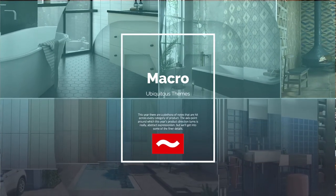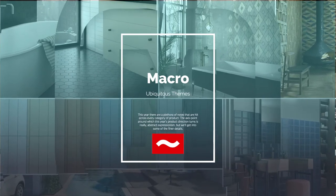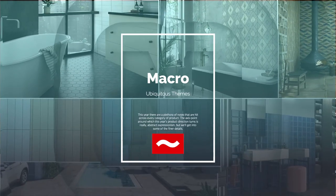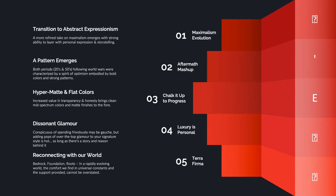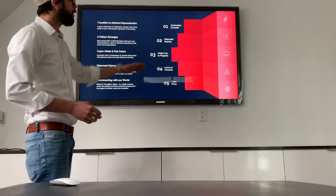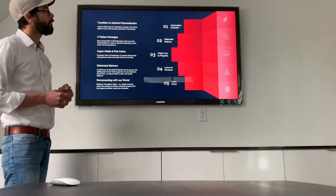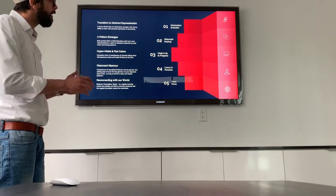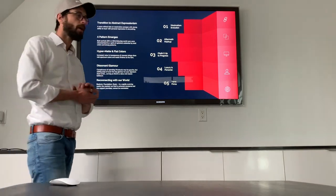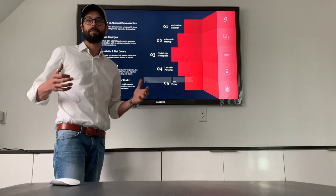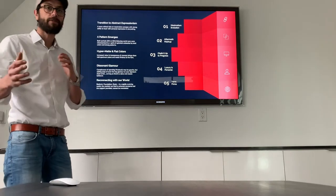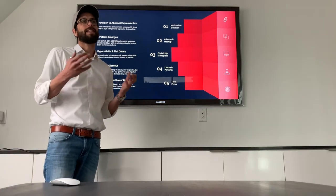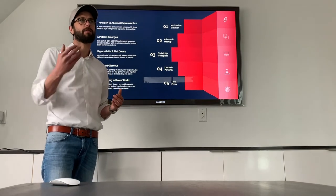We're going to talk about ubiquitous themes or macro trends that translate across every look we're doing in tile today, and more broadly in interiors, exteriors, and our building language in general. We're going through five macro trends. Number one: maximalist evolution into — as Barnett Newman's quote suggests — a transition to a more abstract expressionist style. Then we'll get into 'aftermath mashup,' the decades characterized by the cataclysms that came before.